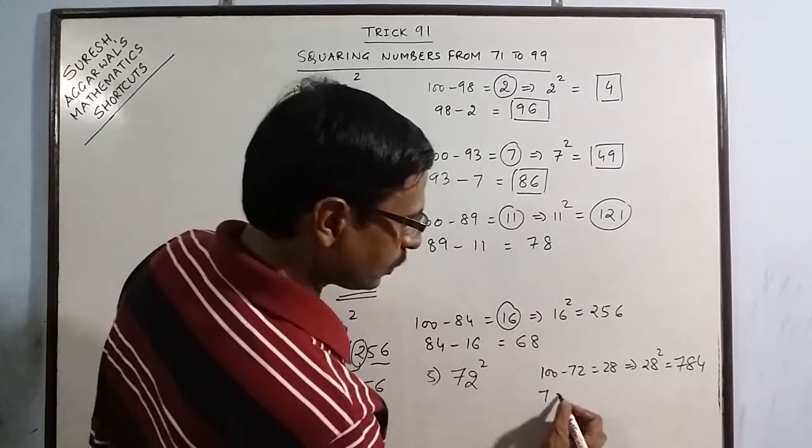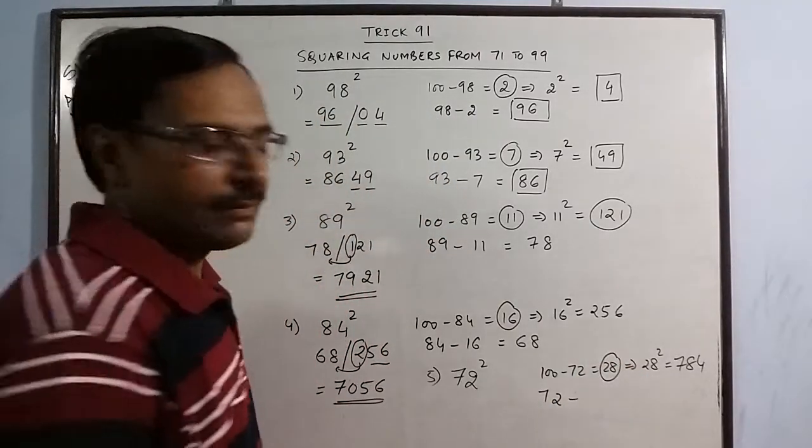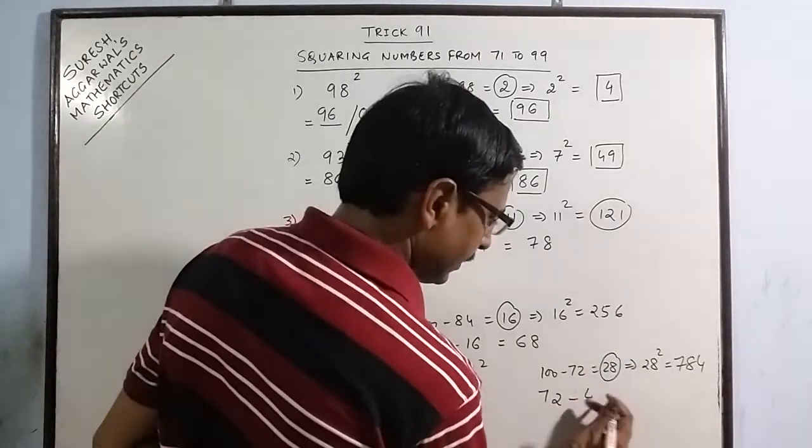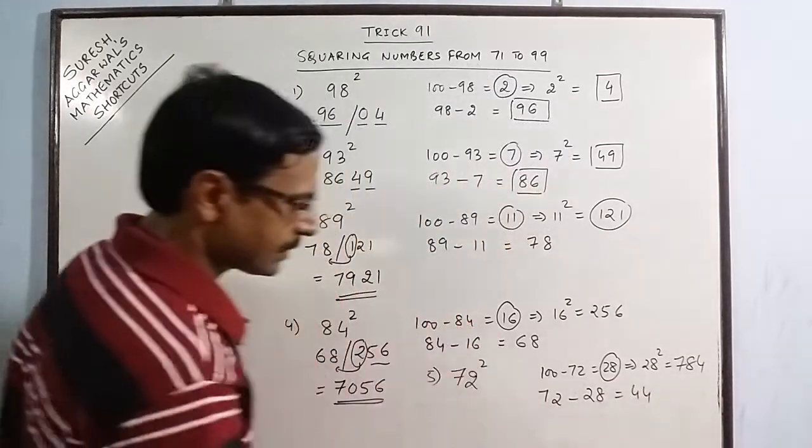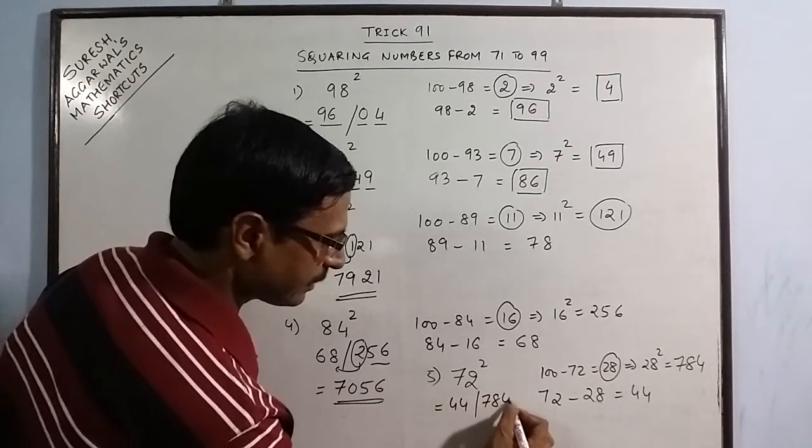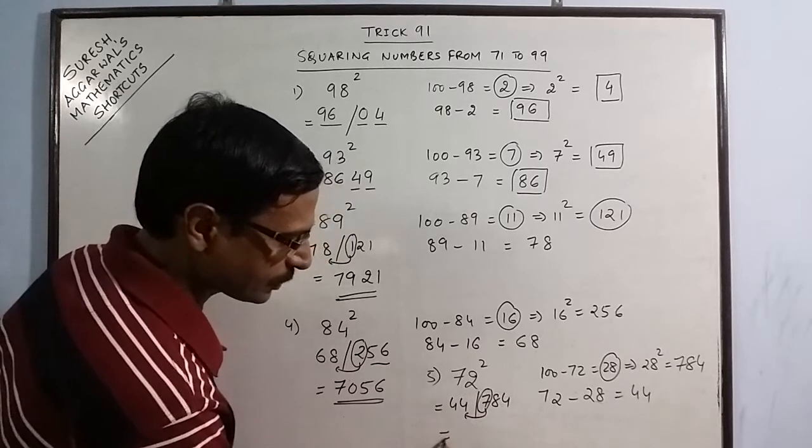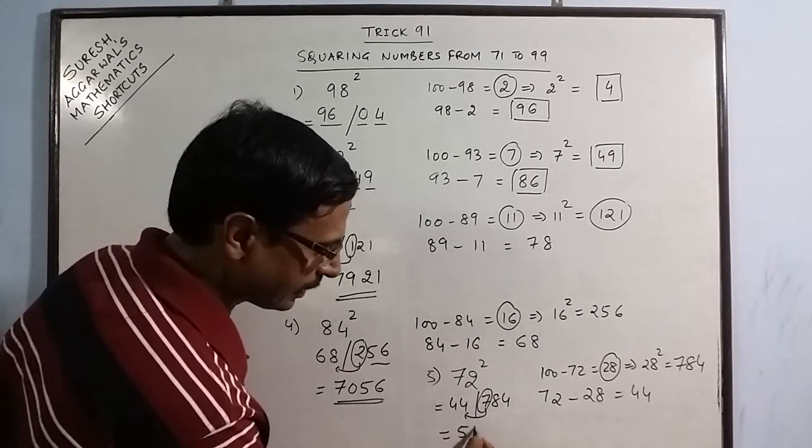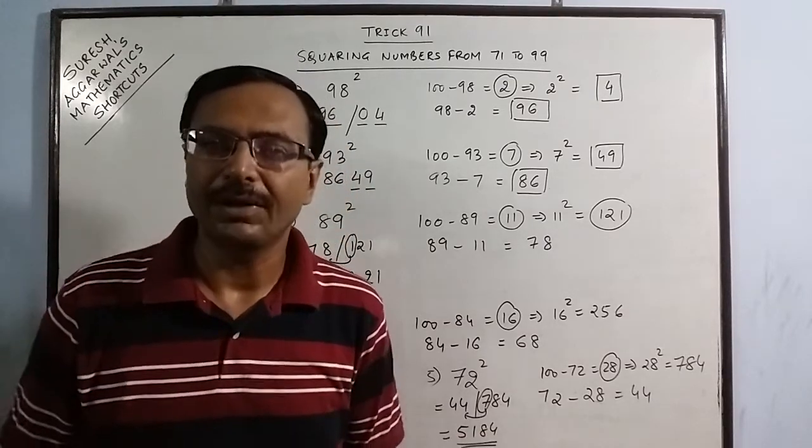And then the number 72, you have to subtract 28 which will give you 44. Now your answer, 44 is the first part and 784 is the second part. But this 7 has to be added to this number. So 44 plus 7 gives you 51 and 84 retains its place to find the answer 5184.